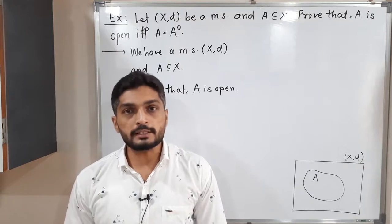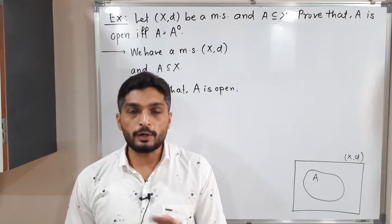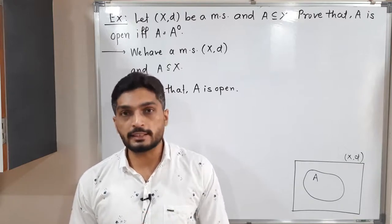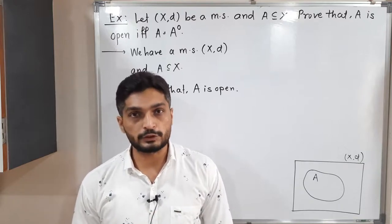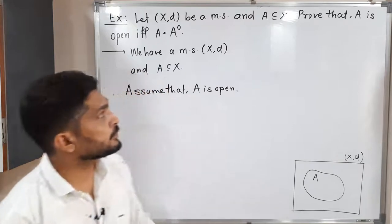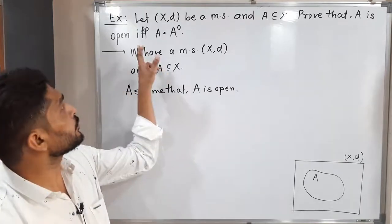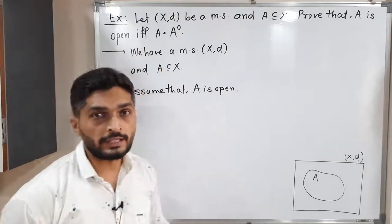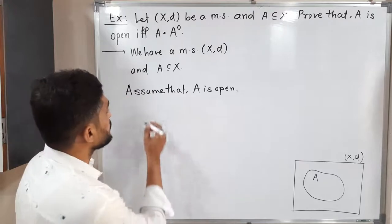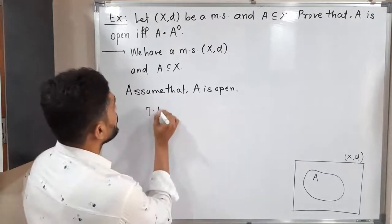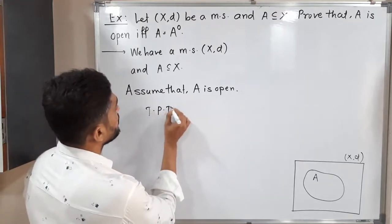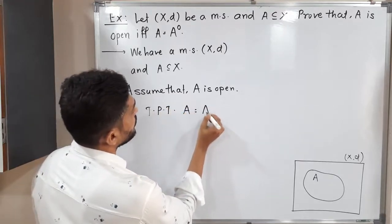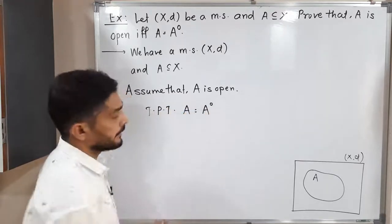There is an if and only if, which means we have to prove in both ways. Let us consider one part first. I am assuming A is open, and our target is to prove that A is equal to A interior.